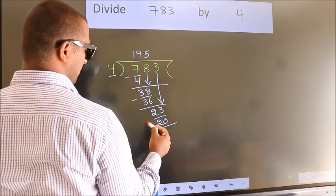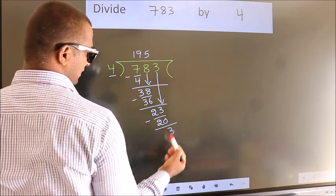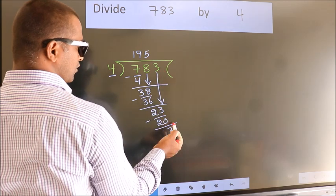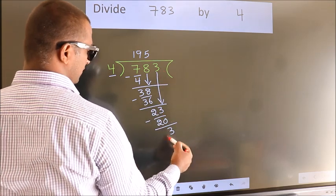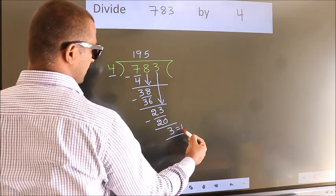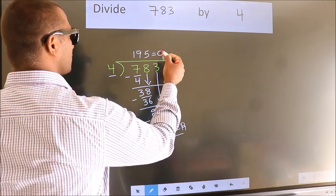Now, we subtract. We get 3. No more numbers to bring it down. So, we stop here. This is our remainder. This is our quotient.